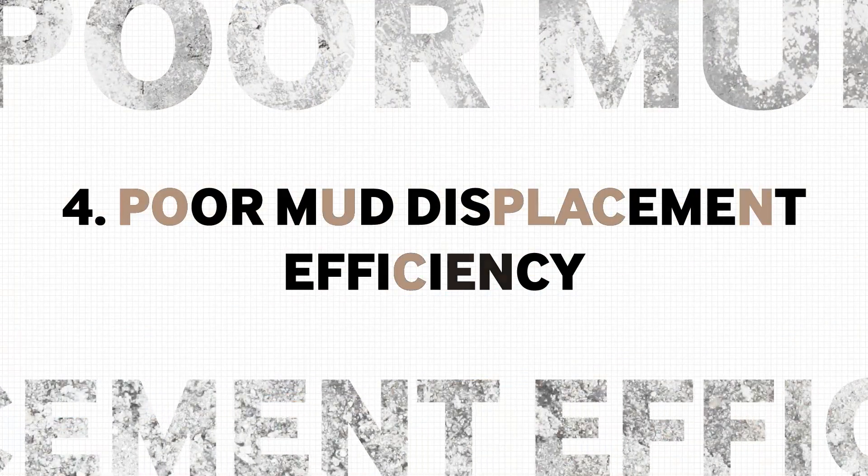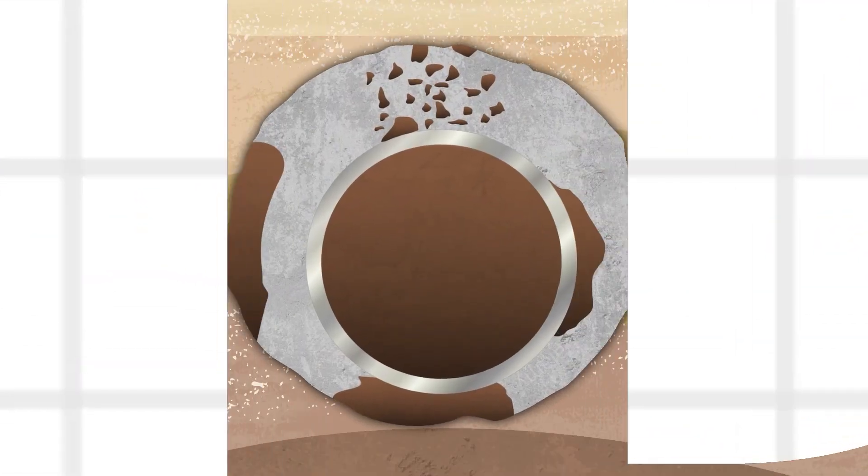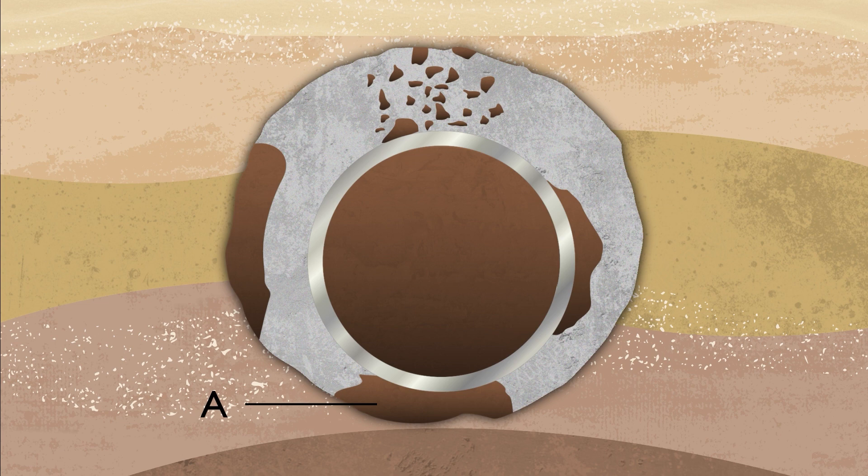Poor mud displacement efficiency is defined by the percentage of the annular cross-section that is covered by drilling fluid instead of cement. Position A in this diagram shows mud in the narrow side of the annulus and is the most common area for poor displacement.